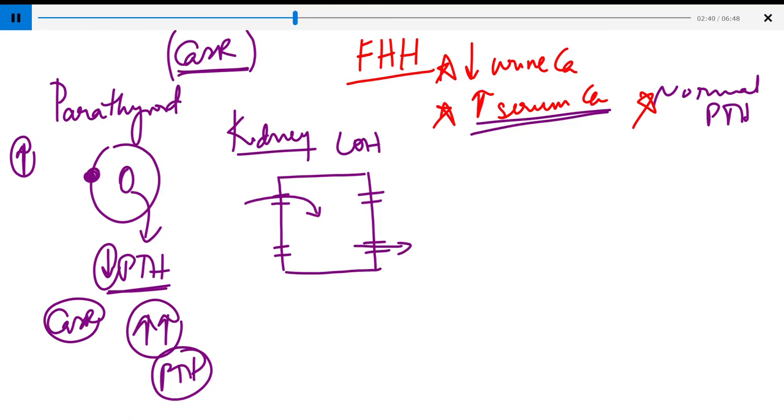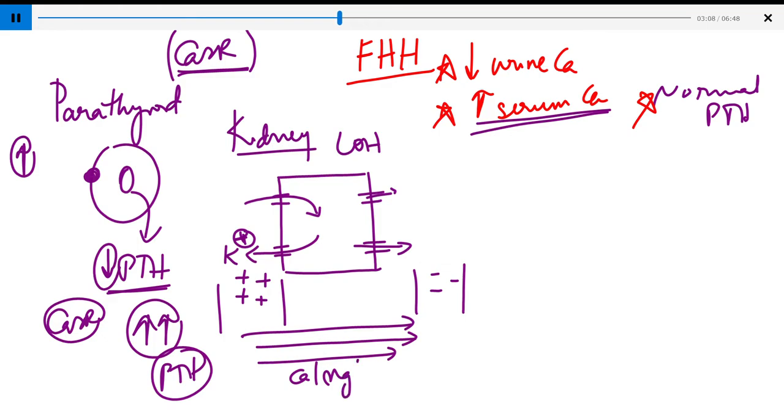The NKCC absorbs sodium, potassium, and chloride. The chloride exits, the potassium gets back out, and sodium is reabsorbed. The potassium creates electropositivity in the tubular fluid and electronegativity in the peritubular capillaries, which drives the paracellular reabsorption of cations like calcium, magnesium, and sodium.